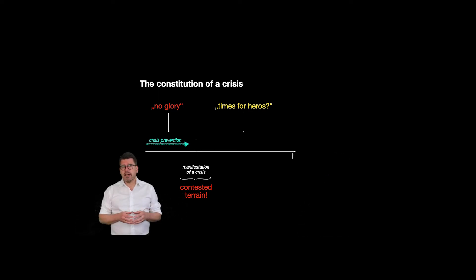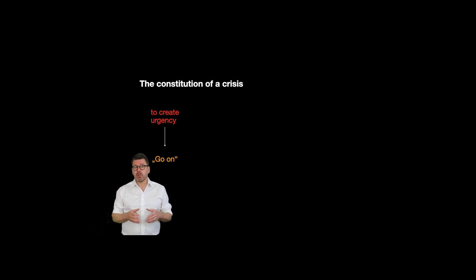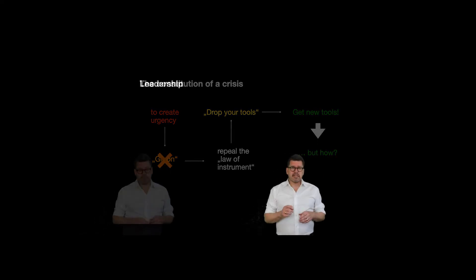I would like to focus on the process what happens when an event is framed as a crisis. In this sense, framing an event as a crisis means to create a form of urgency and, at the same time, the insight that a simple go-on no longer works. This implies the insight that the law of instruments must be repealed. Drop your tools now and get new tools. But where should the new tools suddenly come from? What exactly we have to do now and how can collective action be produced?